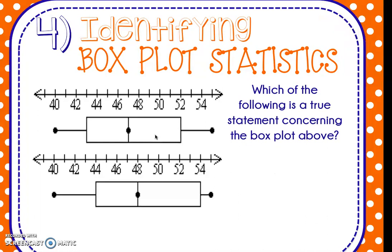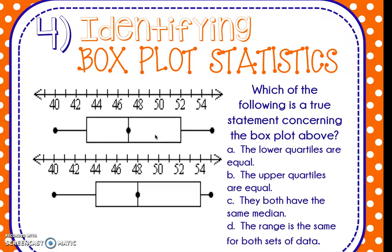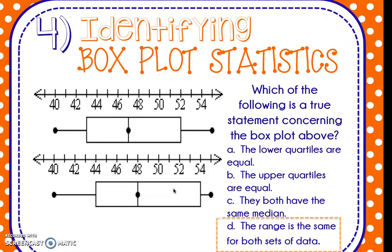I want you to pause the video, do this one by yourself. When you're ready, press play and check that your answer is correct. You're looking for which of the following is true concerning this double box plot. If you take a look at this double box plot, you can see that the minimum of 40 and the maximum of 55 are the same on both box plots. Therefore we know that the range is the same for both sets of data. They don't have the same lower quartile, they don't have the same median, and they don't have the same upper quartile. However, they do have the same upper extreme and lower extreme — 55 minus 40 gives a range of 15 for both data sets.